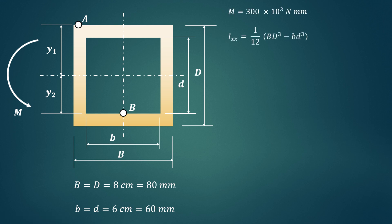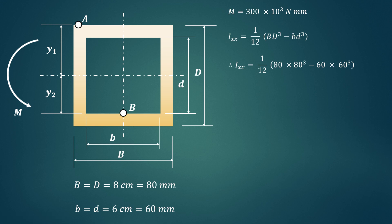Considering the neutral axis as the XX axis, Ixx for a hollow rectangular section is (1/12)(BD³ − bd³). Substituting B = 80 mm, D = 80 mm, b = 60 mm, d = 60 mm, the calculated moment of inertia about the XX axis is 2.333×10⁶ mm⁴.